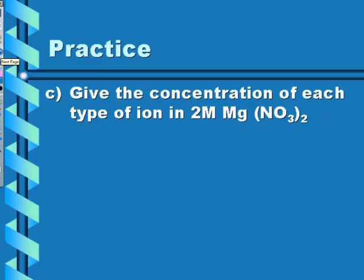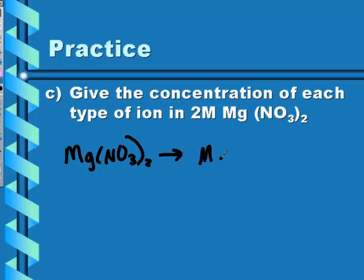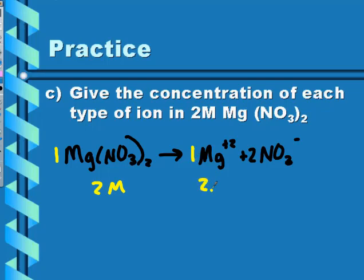This problem asks us to give the concentration of each type of ion in a two-molarity magnesium nitrate solution. The first thing you need to do is write the dissociation equation — how does magnesium nitrate break apart? It's an ionic compound that breaks apart into magnesium ions and nitrate ions. Looking at the formula, it has one magnesium and two nitrates. With two molarity magnesium nitrate, I have a one-to-one ratio of magnesium nitrate to magnesium, so magnesium ion is also two molarity. But the ratio of magnesium nitrate to nitrate ions is one to two, so nitrate would be four molarity.